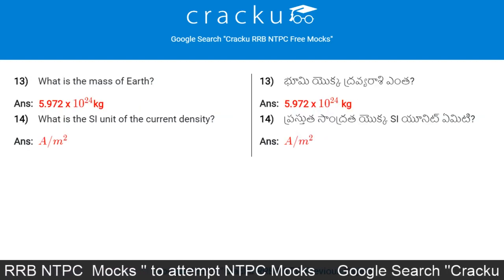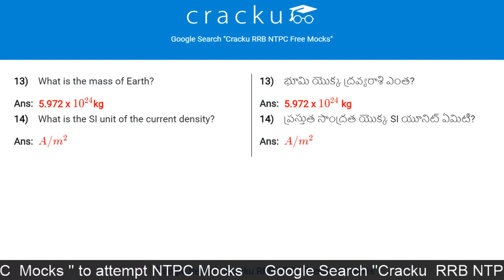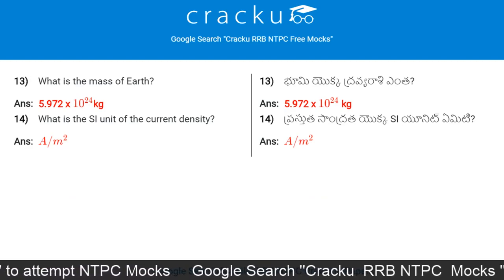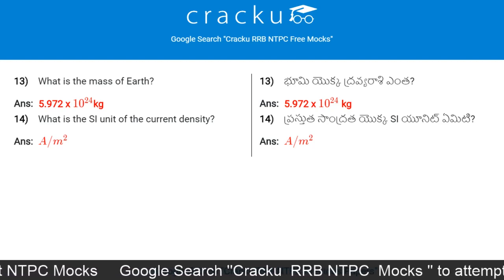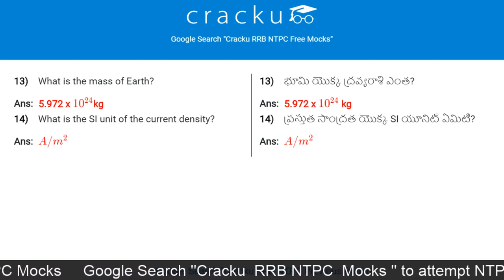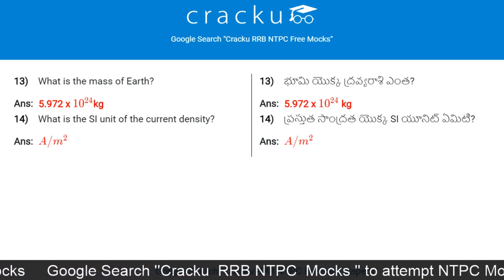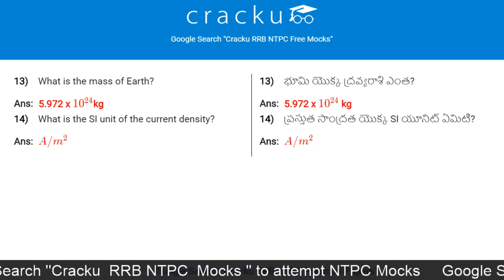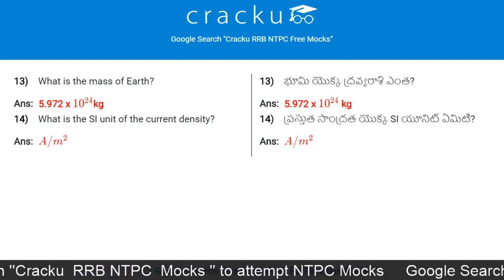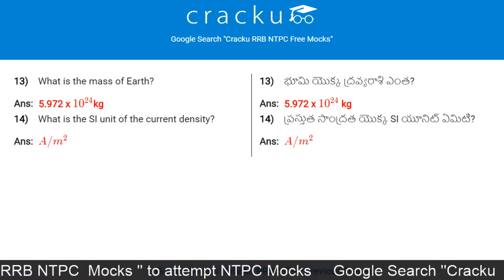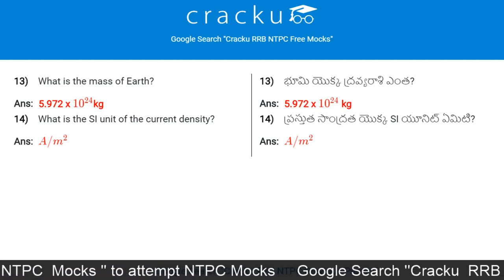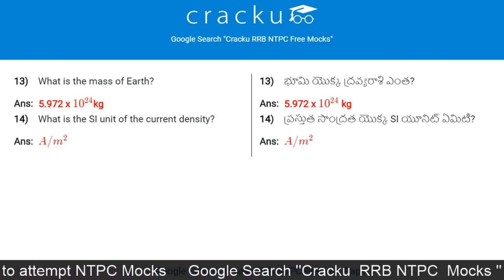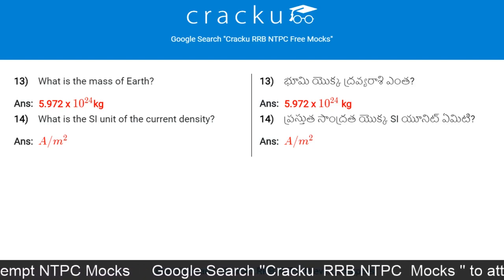What is the formula for time period? One divided by frequency. What is the mass of Earth? The answer is 5.972 × 10²⁴ kg. What is the SI unit of current density? Ampere per meter square.